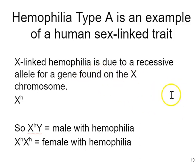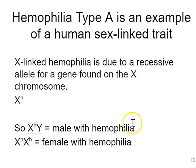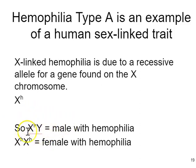X-linked hemophilia is due to a recessive allele for a gene found on the X chromosome, marked as X superscript lowercase h. A male with hemophilia would have this genotype, and a female with hemophilia would be this. When it comes to genes on the X or Y chromosome, you cannot use the words homozygous or heterozygous. Instead, when referring to males who are XY, you call them hemizygous, because there's only one copy of the X chromosome.